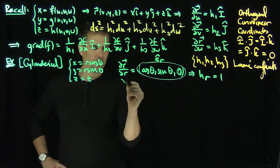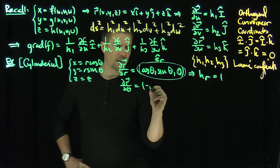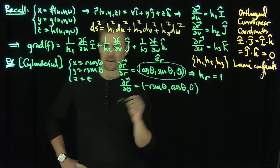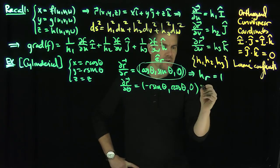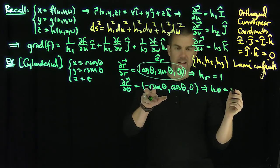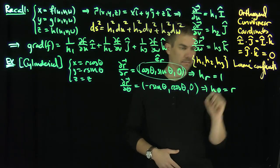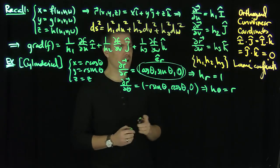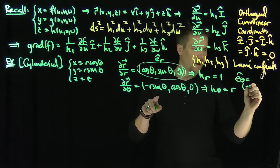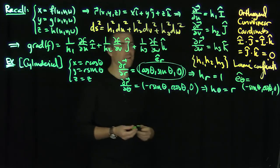Let's do partial r partial θ. That's going to be (−r sin θ, r cos θ, 0). So h_θ is the length of this vector, which is just r. And that tells me that e_θ-hat is (−sin θ, cos θ, 0). That's my e_θ.